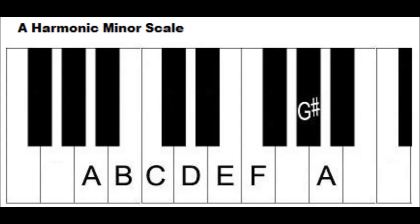Primary chords in a minor key are based on the first, fourth, and fifth notes of the minor scale. For minor keys, the scale used when forming primary chords is the harmonic minor scale. The notes of the A harmonic minor scale are: